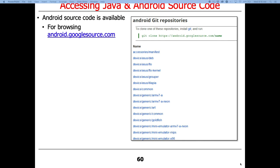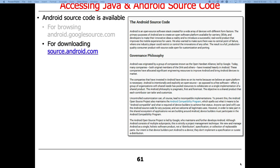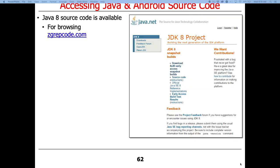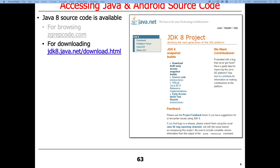All the Android source code can be browsed and downloaded online, though you don't necessarily need it for this course. Similarly, you can browse or download the Java 8 source code. I'm a big fan of having access to the Java source code — it's really interesting, and we'll actually look at bits and pieces of it as we go through the class.